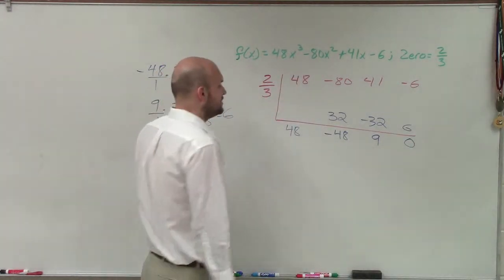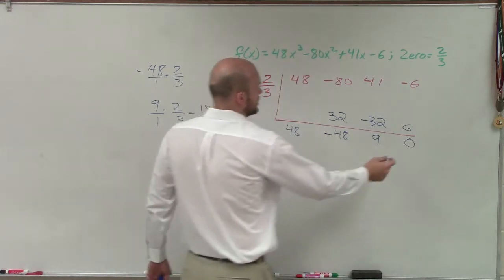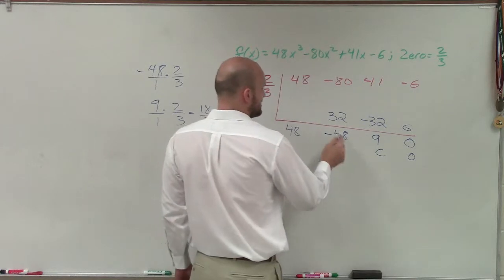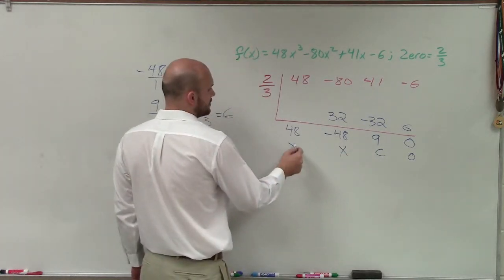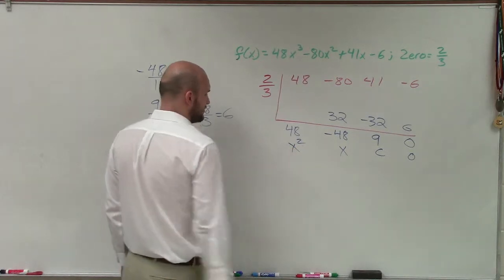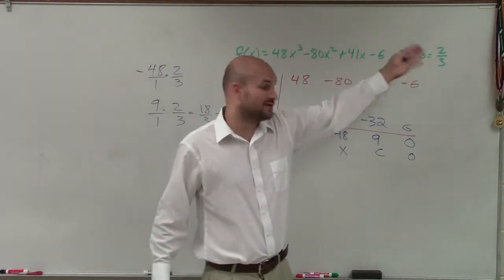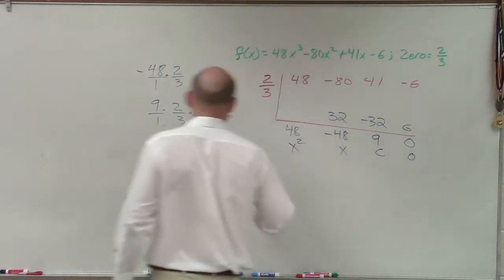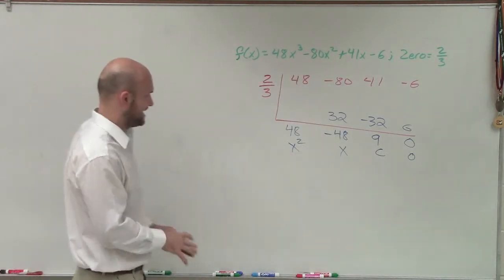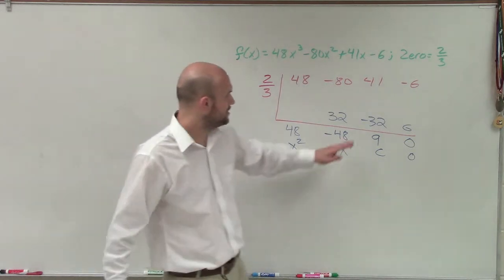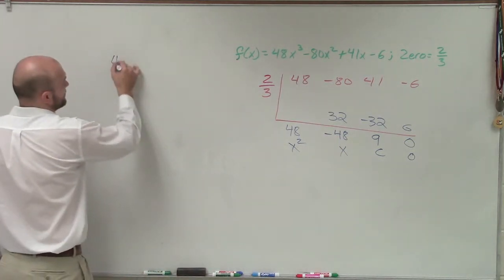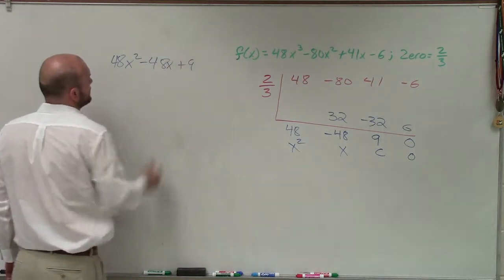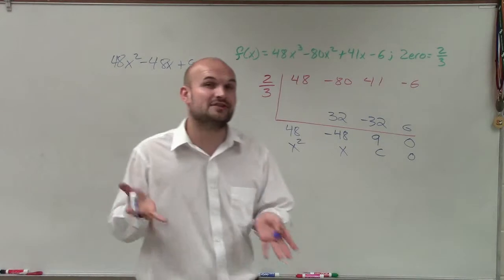So now I have a polynomial with a remainder of 0, a constant of 9, a middle linear term of negative 48x, and a beginning term of a quadratic of 48x squared. So now I'm given one zero of 2-thirds. Now I need to be able to determine what is the remaining factors of this. So you might look at this and say, yeah, I don't know what to do with this one. Well, we look at this and let's write it out here. So I have 48x squared minus 48x plus 9.